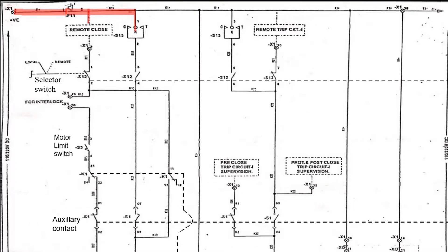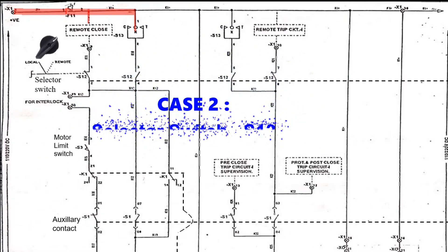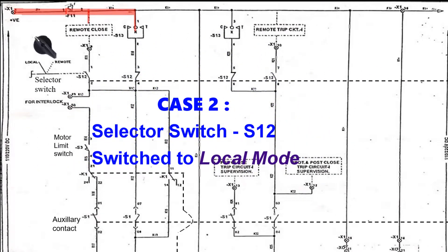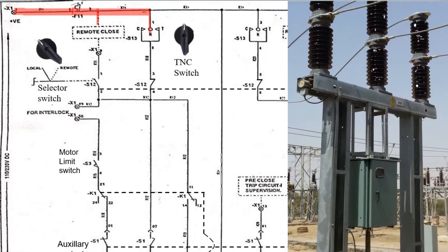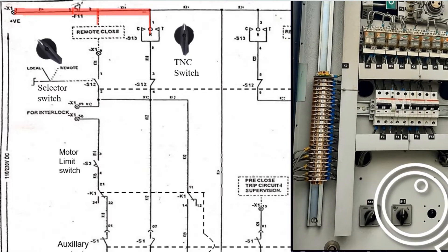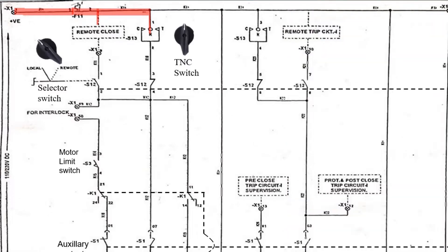Previously, we have seen that the selector switch S12 is connected in remote mode. Now let us consider case 2, where the selector switch is connected in local mode. Then the connection of S12 will be something like this. In local mode, the selector switch is connected to local and the operator performs the close operation where the circuit breaker is actually placed in the switchyard. Then the current will flow in this direction.